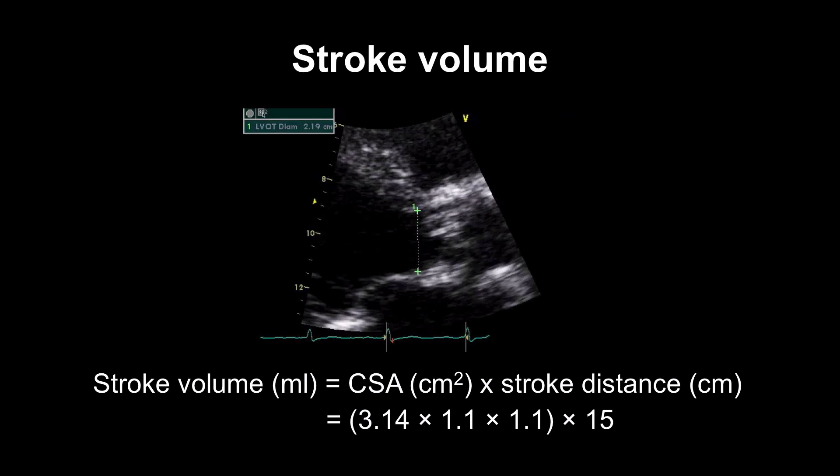And your echo machine will do this for you automatically. So for this case, it's giving us a stroke volume of 57 mils. So normal is about 60 to 100 mils. So this is a sort of borderline measurement.